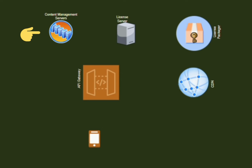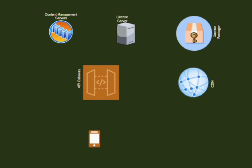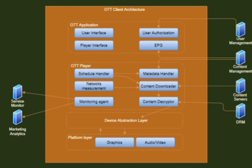Now we discuss content management. The content management service maintains schedules and program information for the content made available to OTT clients. For example, the program schedule for a live channel can be maintained by the content management server, and it keeps the manifest file to download each segment of the content.